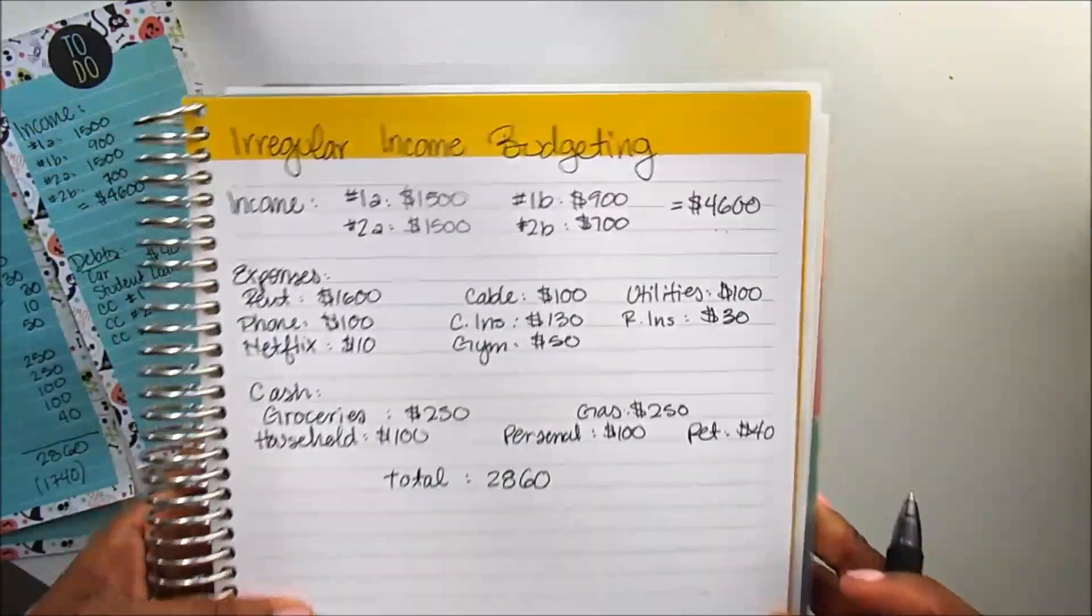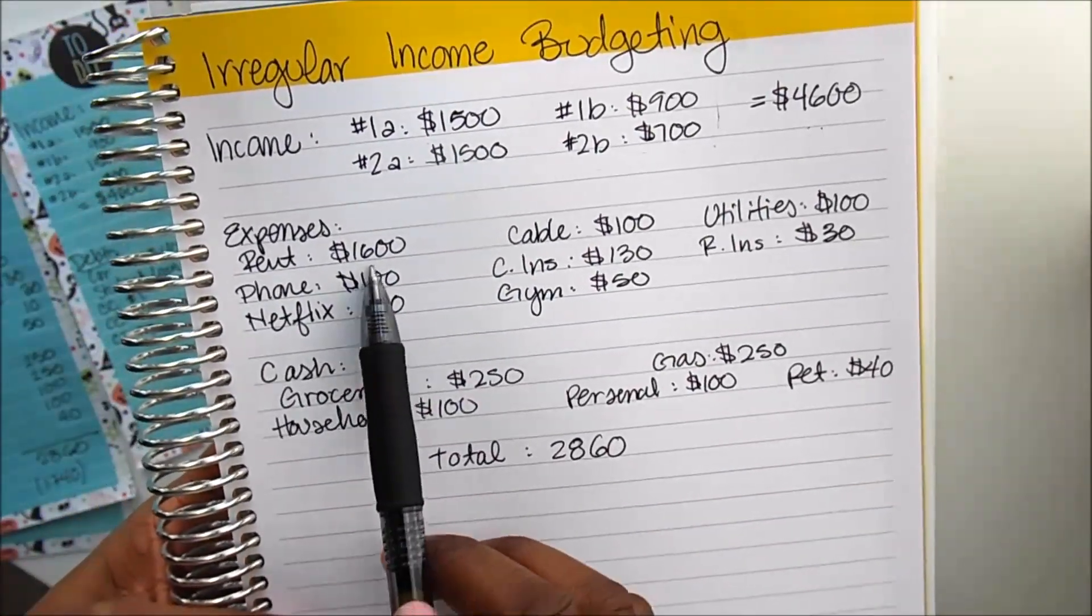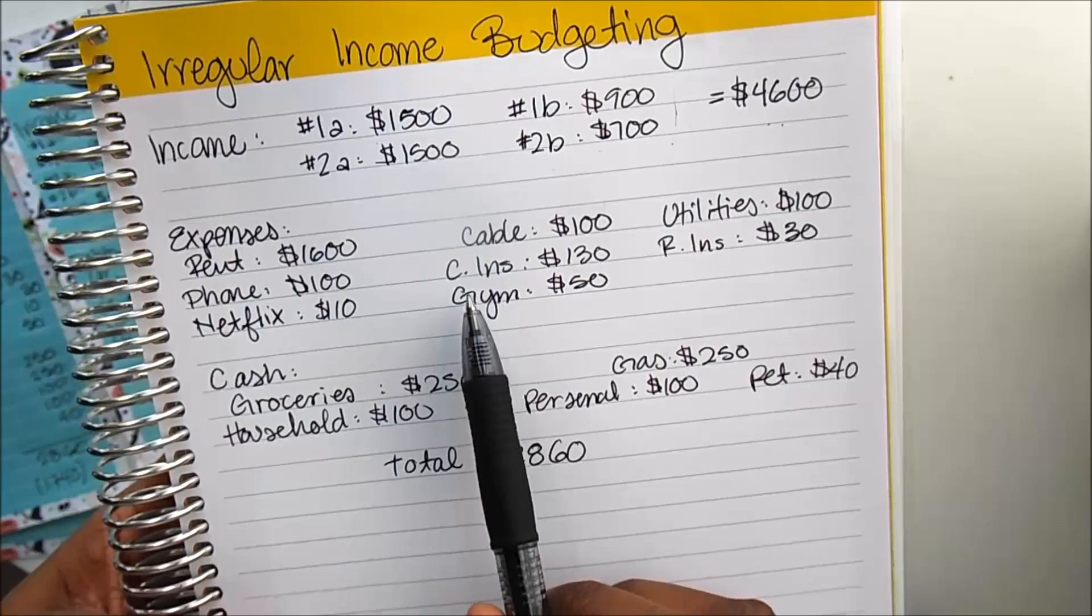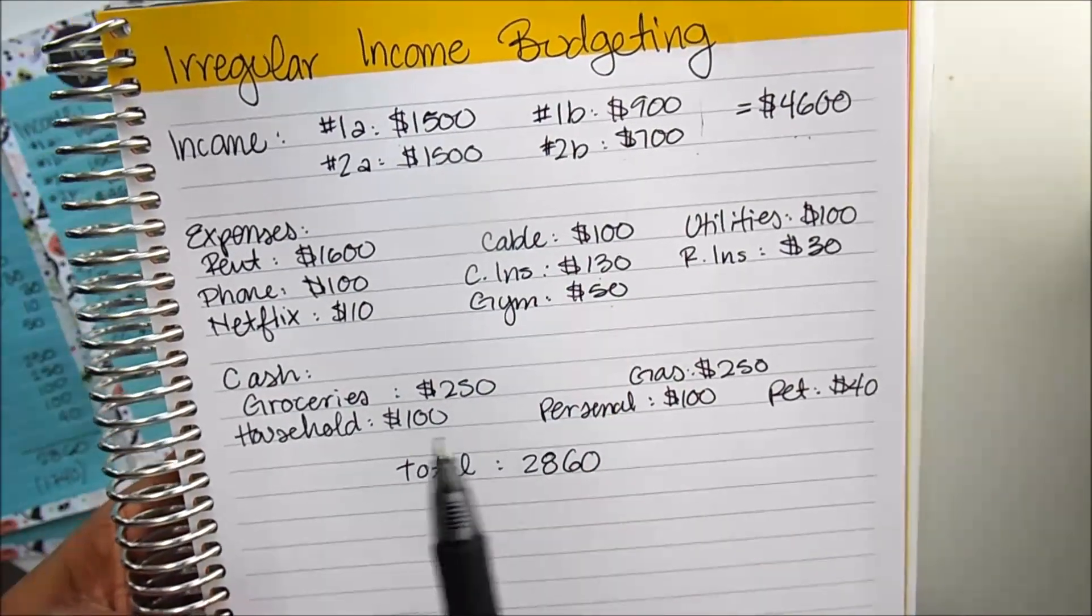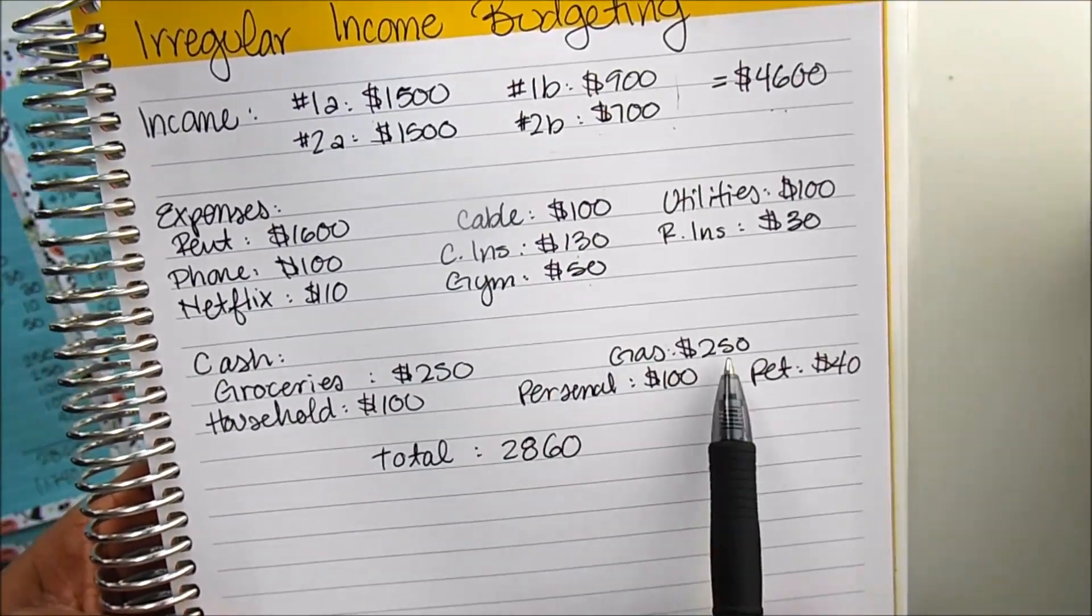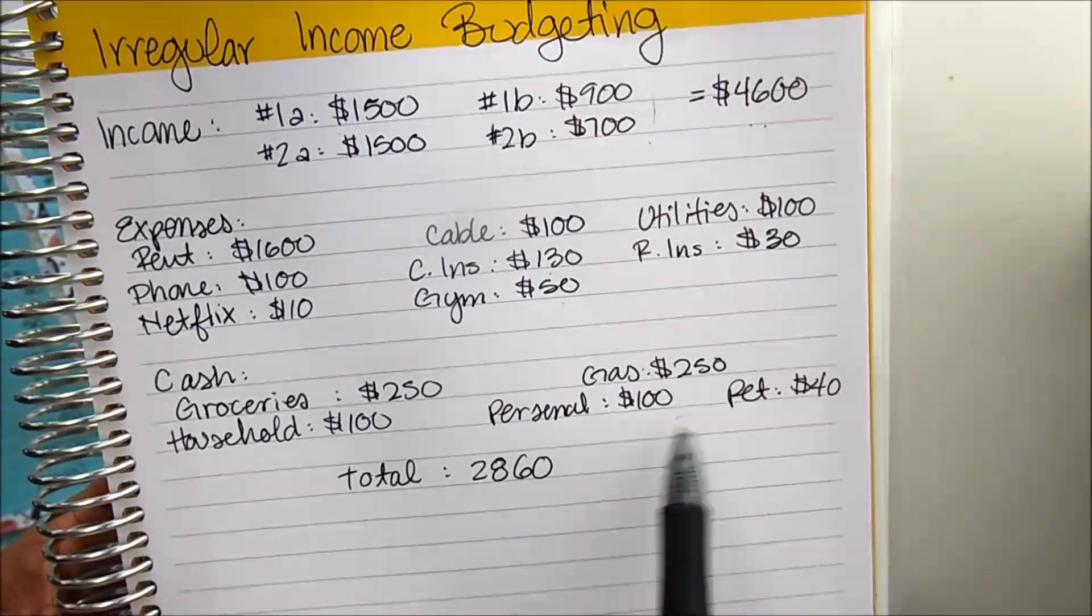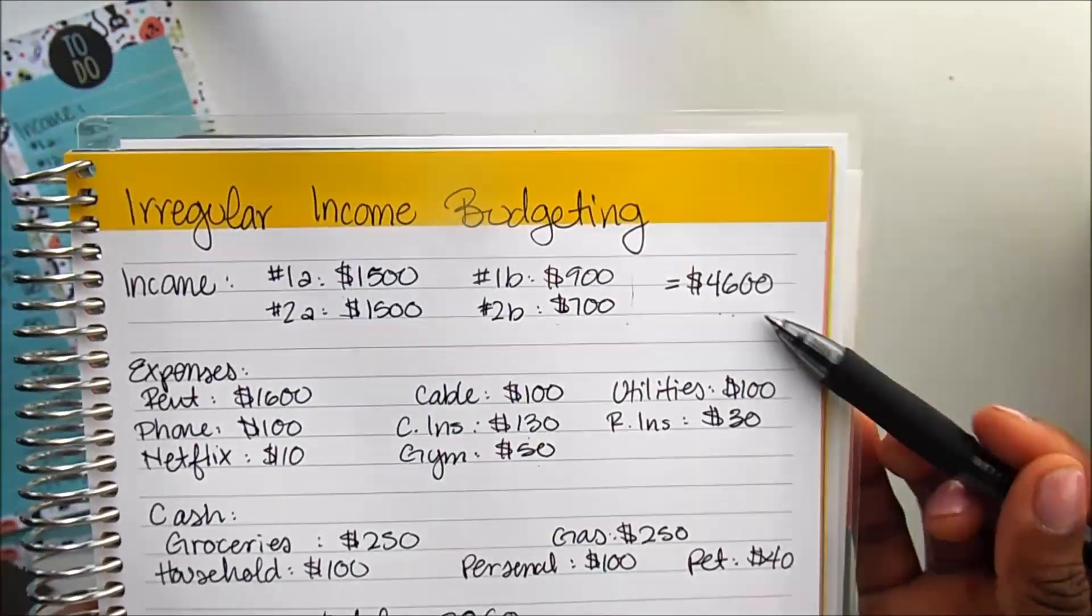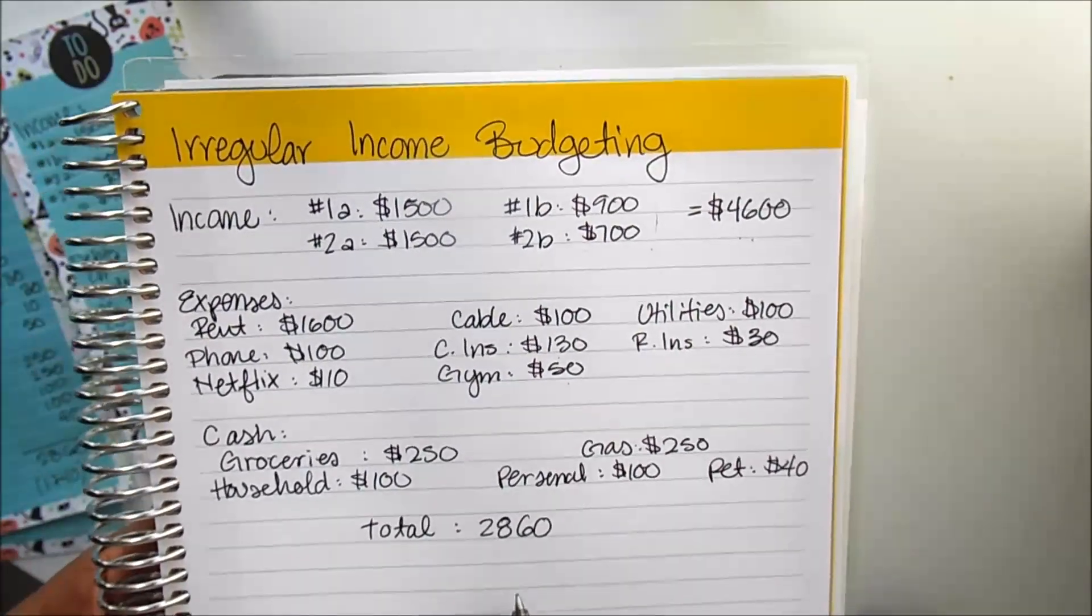Alright friends, so I wrote out our expenses here, and I went ahead and wrote everything out. So we have rent at $1,600, cable at $100, utilities at $100, phone is at $100 as well, car insurance here is at $130, renter's insurance is $30, Netflix is at $10, the gym is at $50. And then I separated out our cash categories as well: groceries we have $250, gas $250, household $100, personal $100, and pet is $40. So the total for all of our expenses at this point is $2,860. So the difference between the $4,600 here and the $2,860 is $1,740. So that's the number that we have left over to work with.